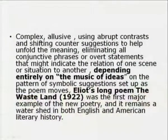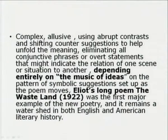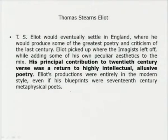Complex and elusive, using abrupt contrast and shifting counter-suggestions to hold the meaning — juxtapositions between different images, eliminating all conjunctive phrases, depending entirely on the music of ideas — like Eliot's long poem The Waste Land. Many people say Eliot's The Waste Land in 1922 was the first major example of the new poetry and it remains a watershed in both English and American literary history. While examining the Imagist movement, we naturally come to T.S. Eliot, who dominates the scene.